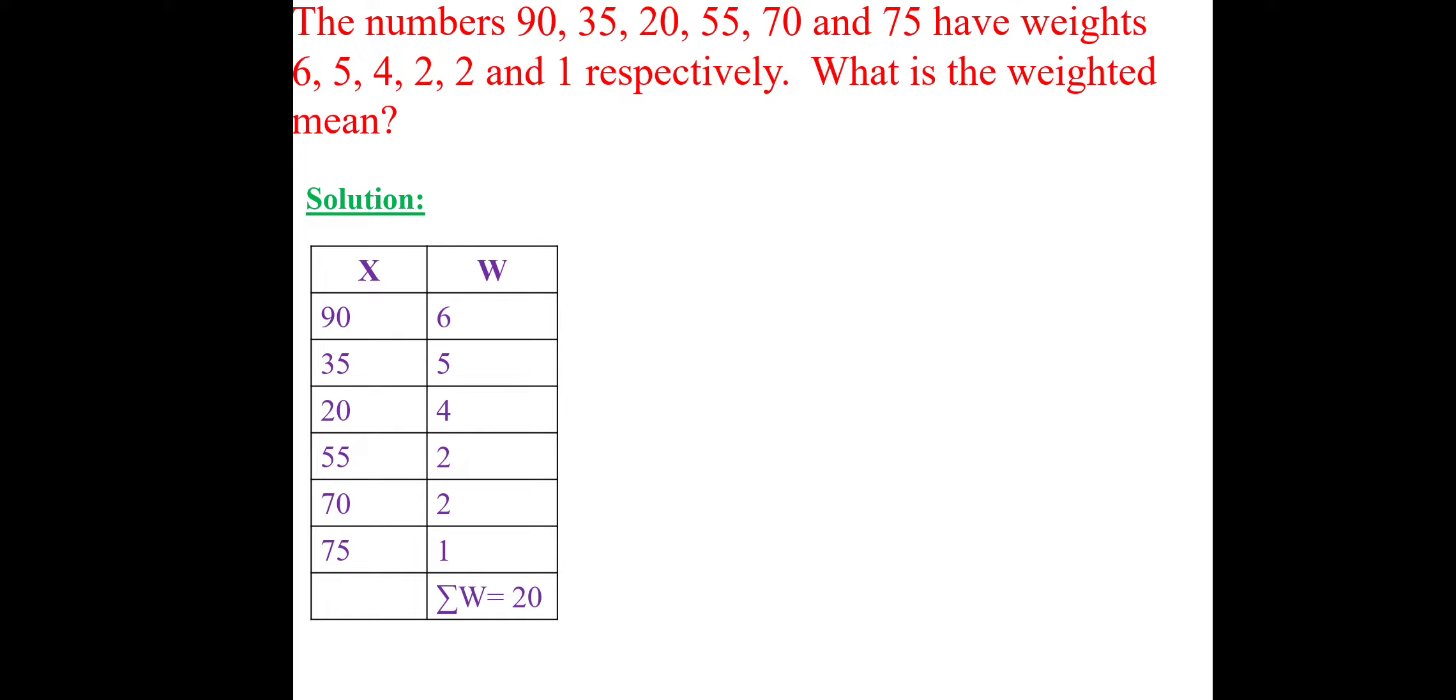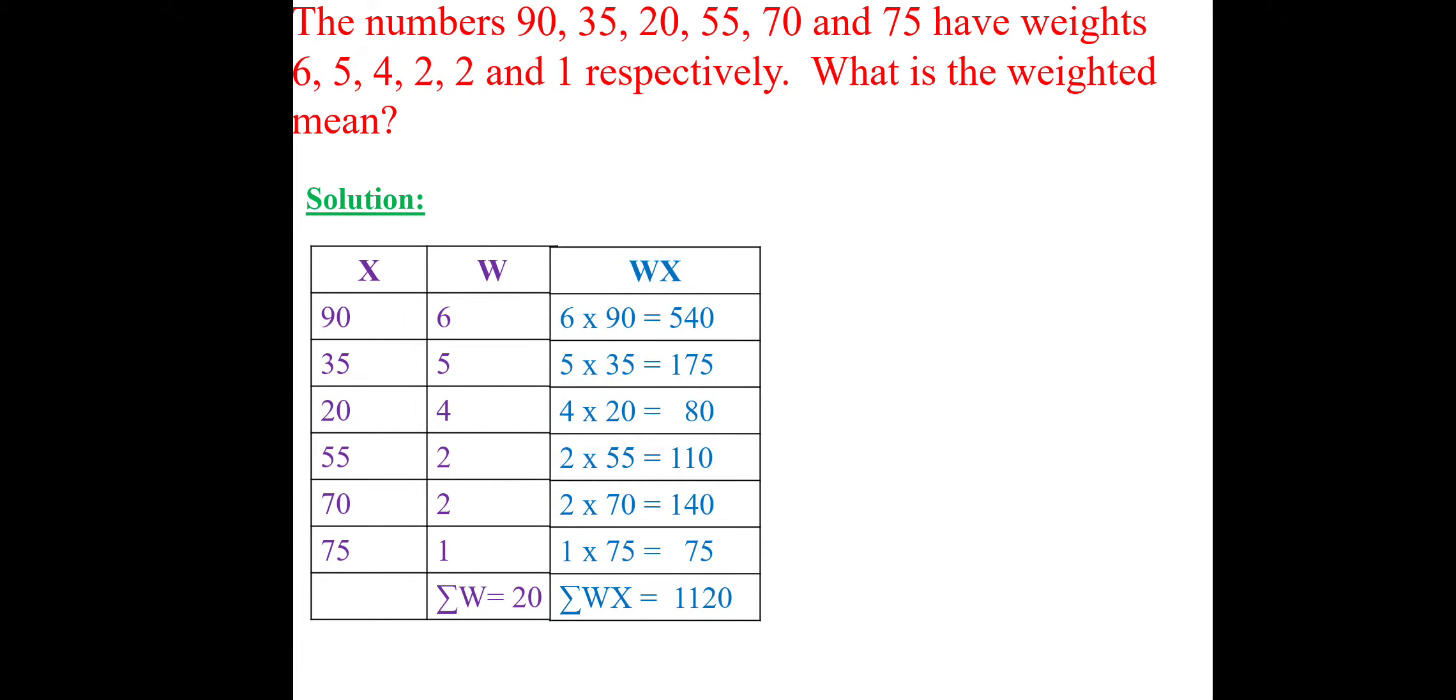Weightage will be 6, 5, 4, 2, 2, 1. 6 plus 5 plus 4 plus 2 plus 2 plus 1 is 20. Summation WX equal to 6 into 90, 540. 5 into 35, 175. 4 into 20, 80. 2 into 55, 110. 2 into 70, 140. 1 into 75, 75. So, all the values total 1120.